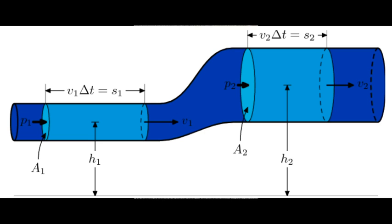P1 plus density times gravity times height plus one-half times density times velocity squared is equal to the same thing — this is Bernoulli's equation.